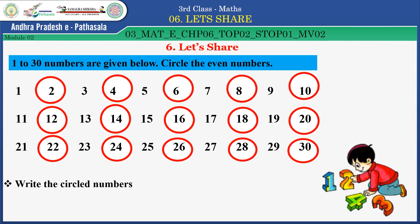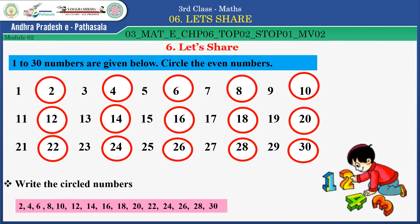Now write all the circled numbers: 2, 4, 6, 8, 10, 12, 14, 16, 18, 20, 22, 24, 26, 28, and 30. These are even numbers.